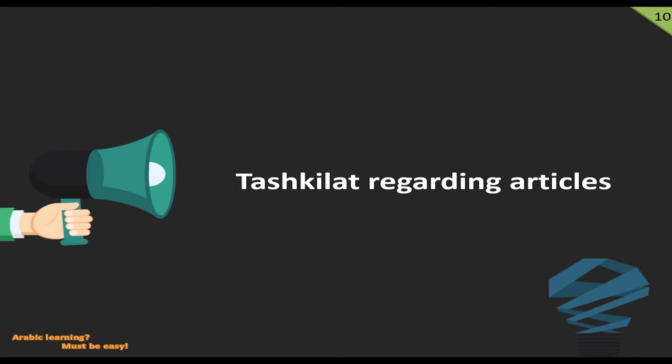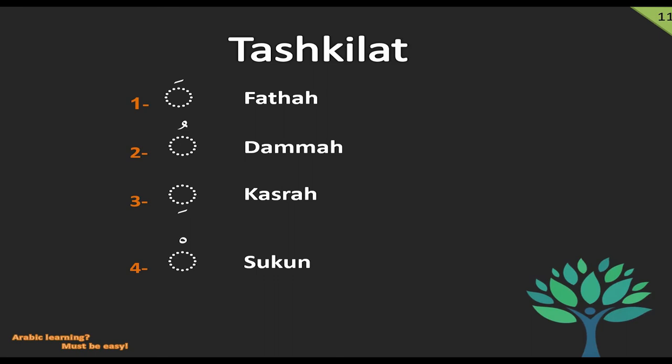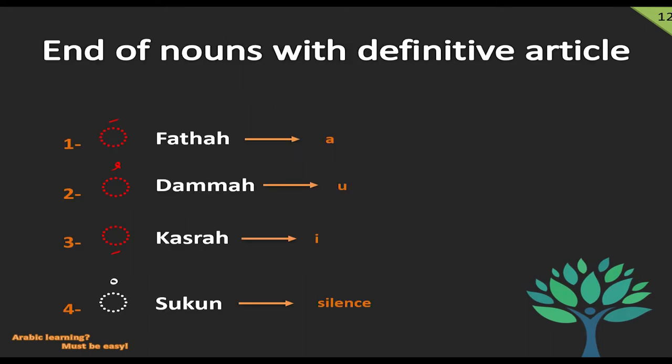Finally, we come to the grammatical part. Today we will take a look at what's new in tashkilat regarding the articles. In our first lecture, we got to know tashkilat: fatha for short A, dhamma for short U, kasra for short I, and sukoon for silence. Today we are concerned with what kind of change occurs in tashkilat only at the end of the noun, if the article is definite or indefinite.